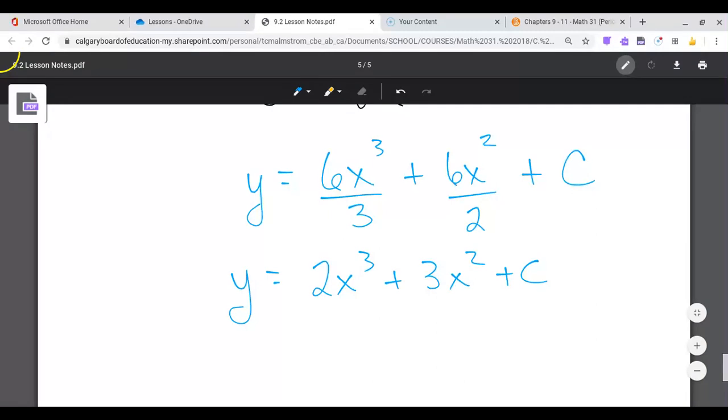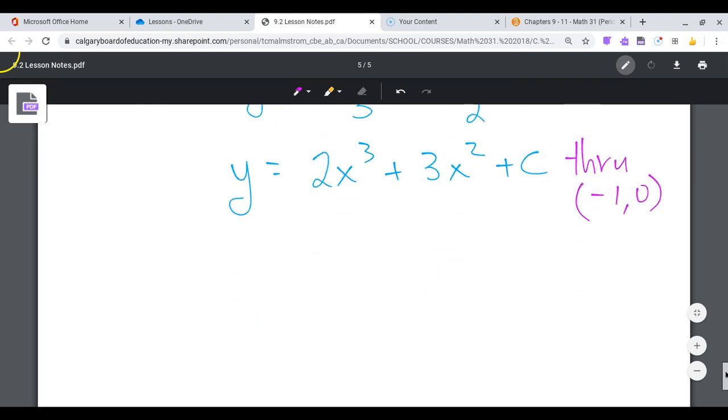But we know it goes through, okay, we know this function goes through the point negative 1, 0. So I'm going to substitute that in to find my constant. So y is 0 when x is negative 1. So substitute those in, and let's find c.